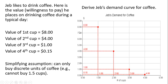What I like to do is just graph these coordinates. I want to find $8 and one — so for the first cup of coffee, Jeb values that at $8, his maximum willingness to pay. If Jeb drinks one cup, the most he's willing to pay for the second cup is $4, so I'm finding that coordinate 4 and 2 right here. Then I'm doing the same thing for the third and fourth cup of coffee, marking those coordinates with these red dots here.